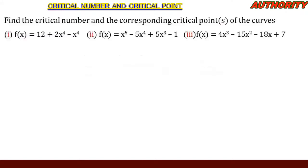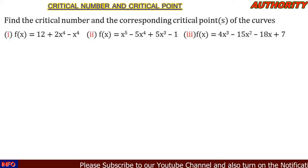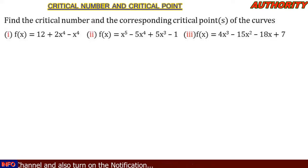We're talking about critical numbers and critical points. Let's take a look at this question: find the critical numbers and the corresponding critical points of the following. Number 1: f(x) = 12 + 2x⁴ - x⁴. Number 2: f(x) = x⁵ - 5x⁴ + 5x³ - 1. Number 3: f(x) = 4x⁴ - 15x² - 18x + 7.